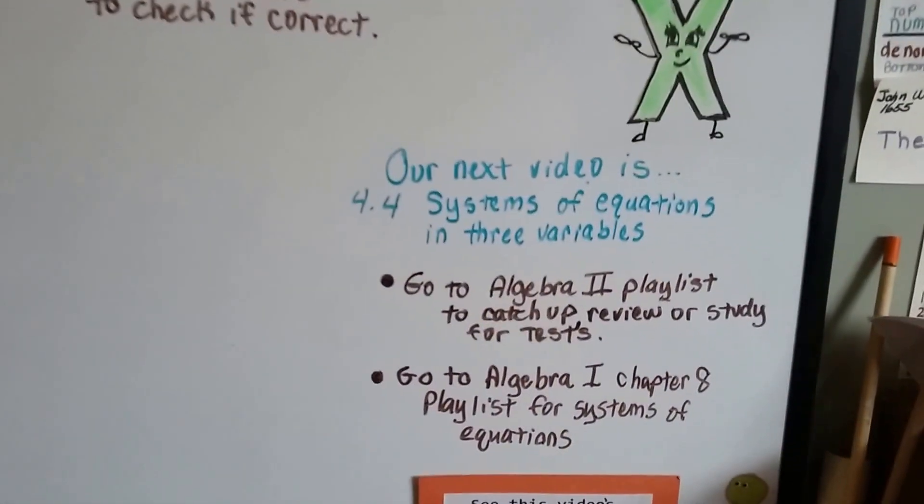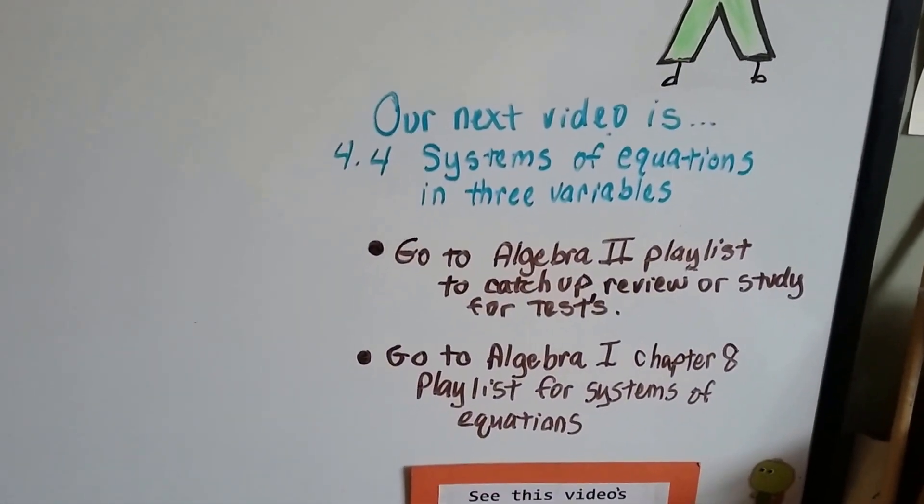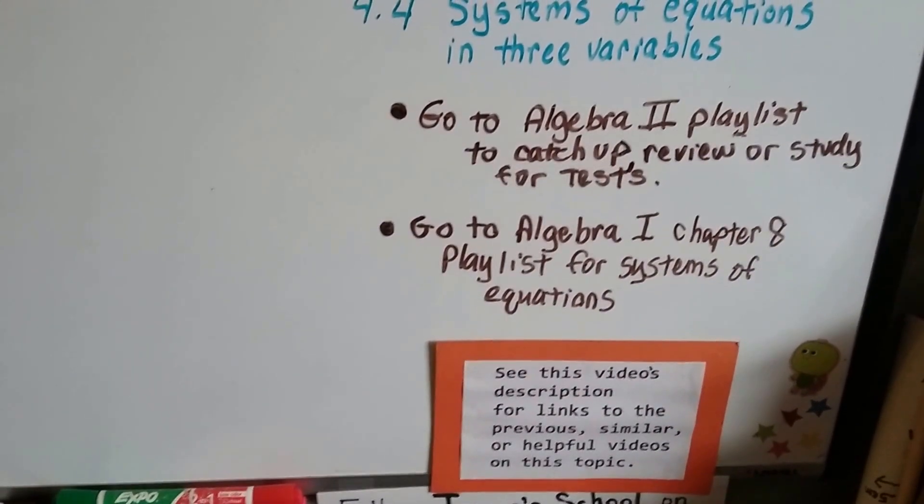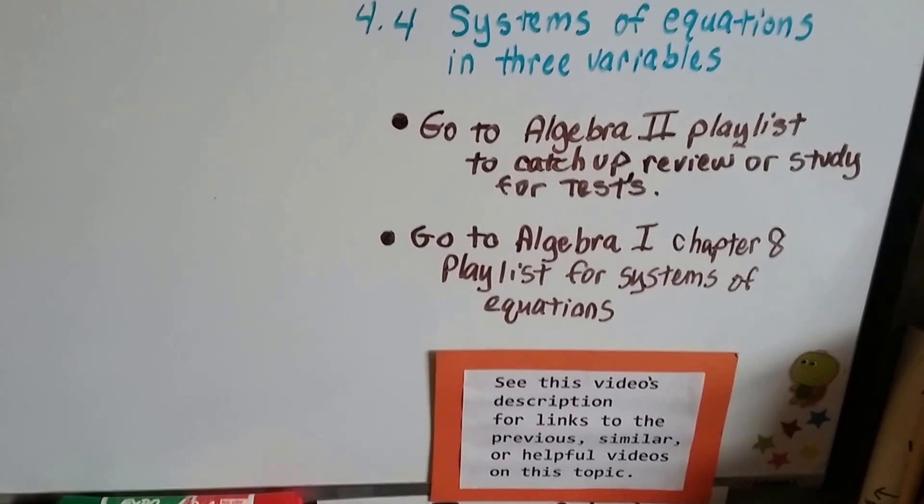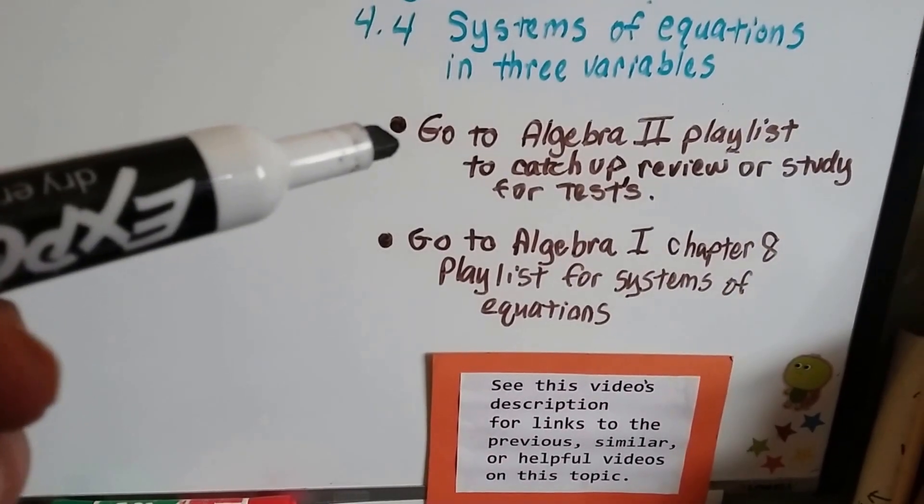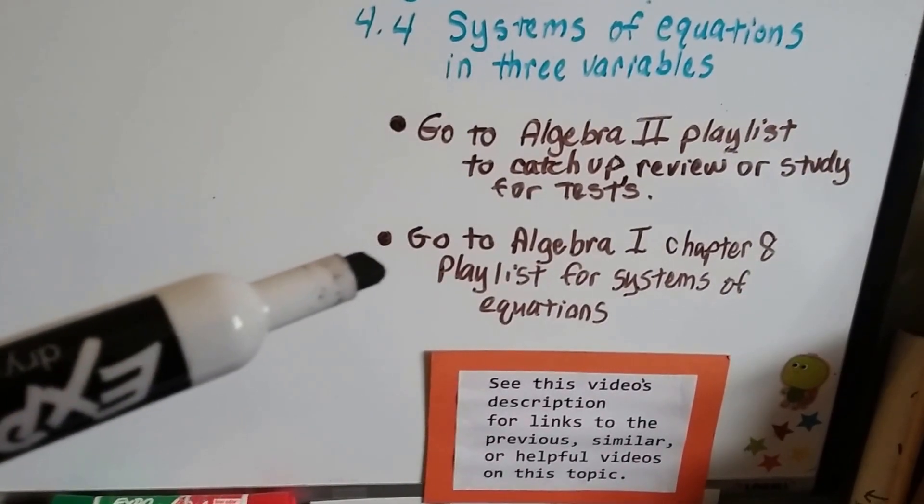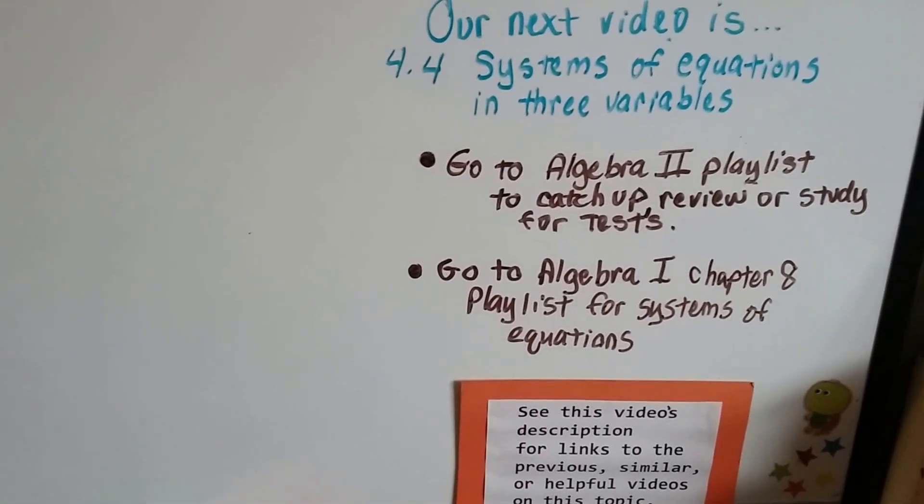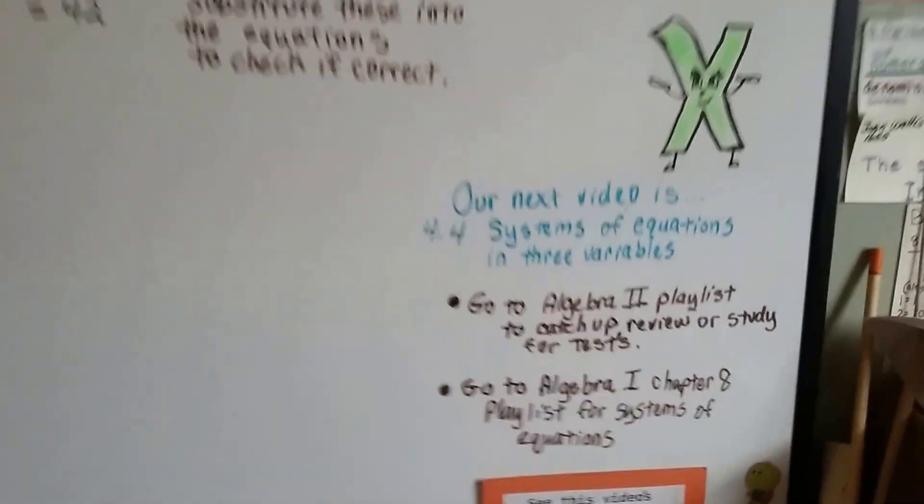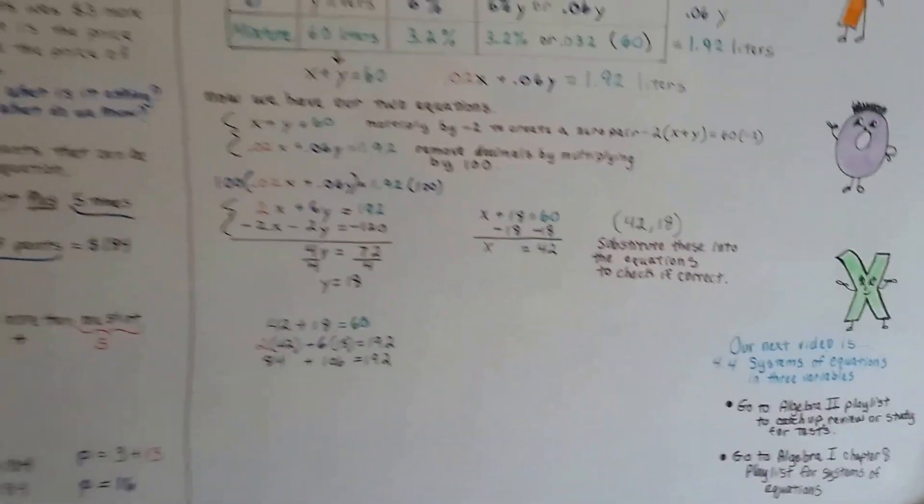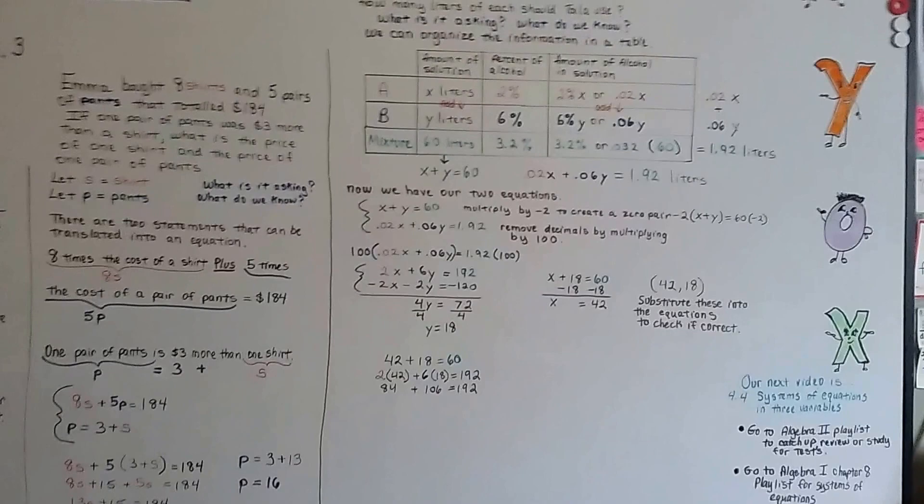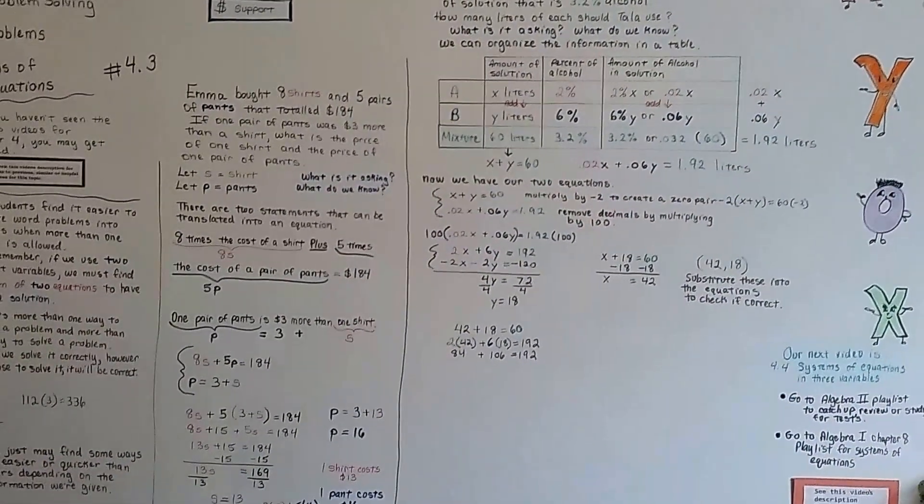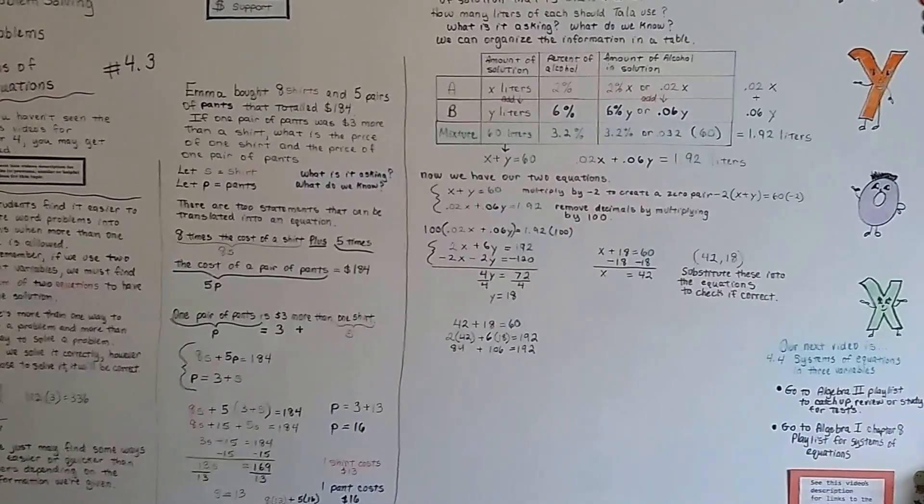Our next video is 4.4 and we're going to talk about systems of equations in three variables. And, I'm going to have the links to the previous videos in this algebra 2 playlist. You can just click on it. And, I'm going to also include the chapter 8 playlist from algebra 1 that talks about systems of equations. Alright, we're going to go on to the next lesson. We're going to talk about what happens when we have three variables. What happens when we have an x, y, and a z in a system of equations? Have a great day. Bye. Bye.